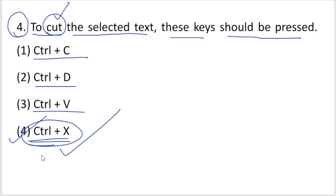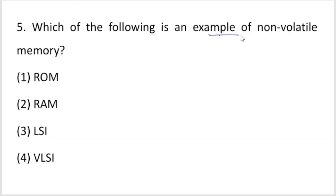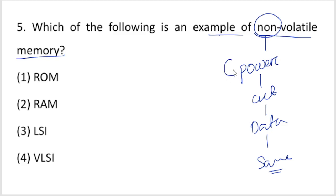Which of the following is an example of non-volatile memory? Non-volatile memory means when power is turned off, the data remains saved and is not erased. The options are ROM, RAM, large scale integration, and very large scale integration.